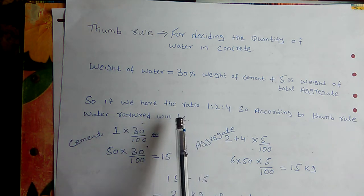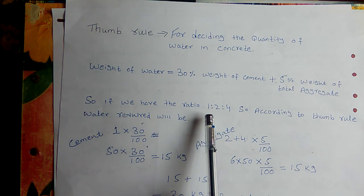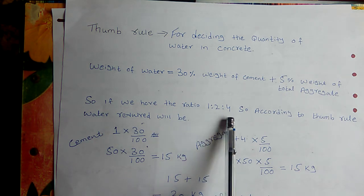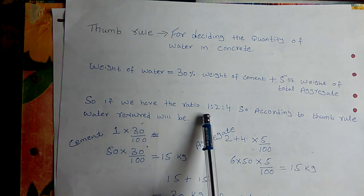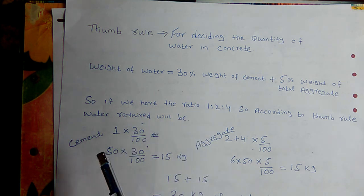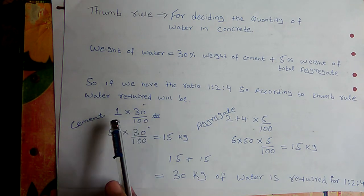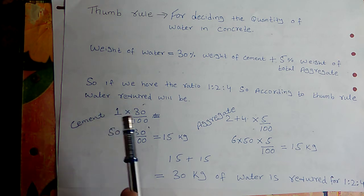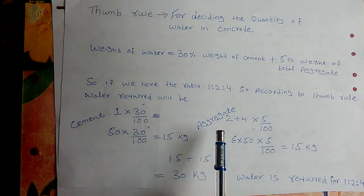Let's find the required amount of water for a 1:2:4 concrete mix according to the thumb rule, where 1 is cement, 2 is fine aggregate, and 4 is coarse aggregate. One bag of cement is 50 kg, so: 30% of 50 kg = 50 × 30 ÷ 100 = 15 kg from cement.